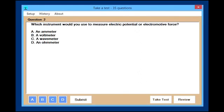One thing I might want to bring out here is that you do not have to use the mouse necessarily. You can use the keyboard. Which instrument would you use to measure electrical potential or electromotive force? That's a voltmeter. You can press B and press enter and get the next question.